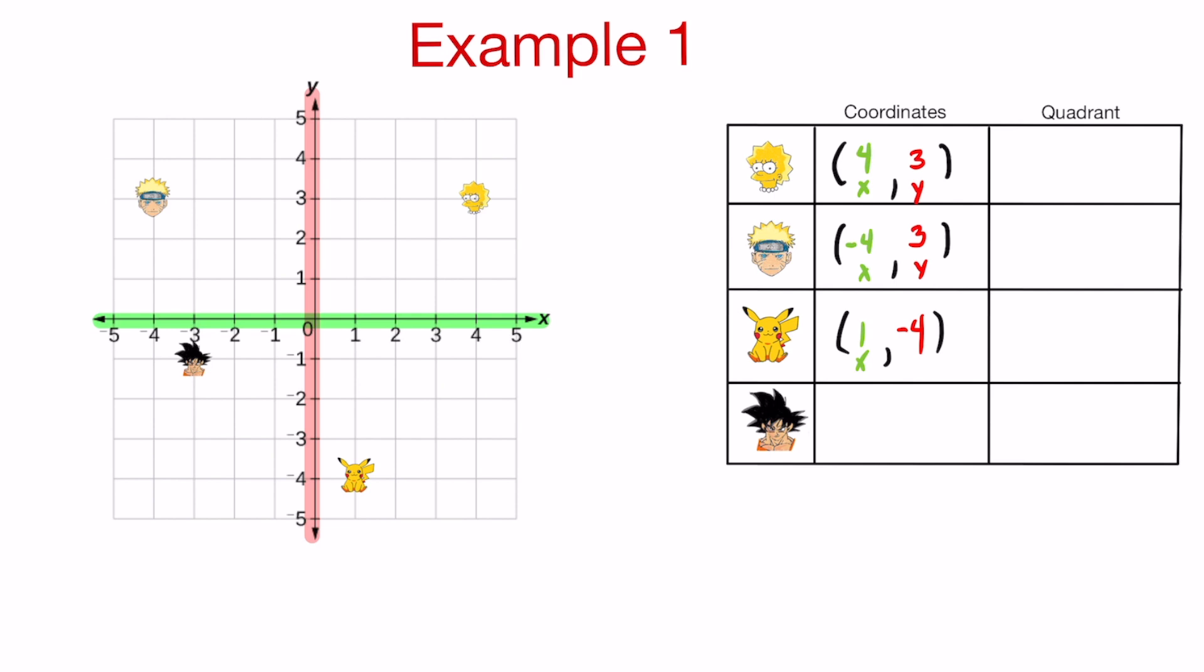The last one is Goku, the strongest guy in the world. If I look at Goku, first look at the x-axis. That is at negative three. That is the first number that you're going to put right here. And if you look at the y-axis, just look at the y-axis from where Goku's at. That is negative one. That is the second number that you're going to put right here to determine what quadrant they're in. And as long as they're not on an x and y-axis, they belong in a specific quadrant.